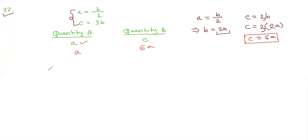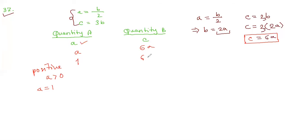Suppose A is positive, meaning A is greater than 0. Let's put A equals 1. So quantity A equals 1, and quantity B equals 6 times 1, which is 6. Since 6 is greater than 1, quantity B is greater than quantity A.